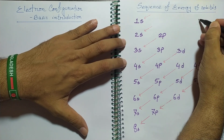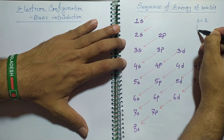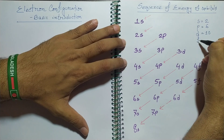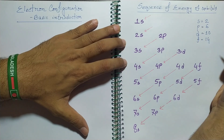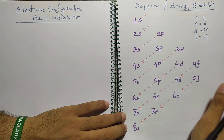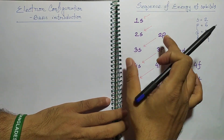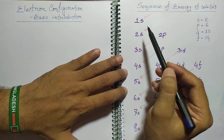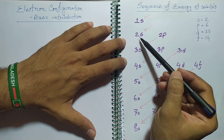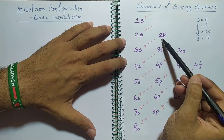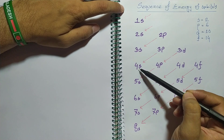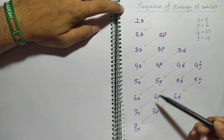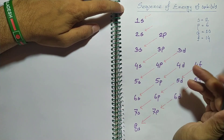We know that the s orbital can hold 2 electrons, p orbital can hold 6 electrons, d orbital is 10 electrons, and f orbital is 14 electrons. From these sequences we know that 1s, 2s, 2p are the orbitals with specific numbers of electrons they can hold. So we can say: 1s2, 2s2, 2p6, 3s2, 3p6, 4s2, 3d10, 4p6, 5s2, and so on following the sequences.